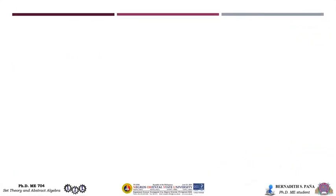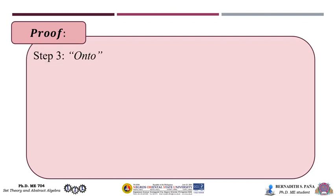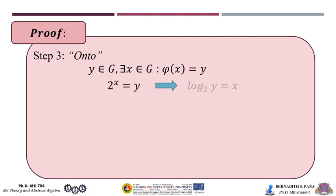The third step is to show that it is onto. This means that for each y in Ḡ, there must exist x in G such that φ(x) = y. So we have 2^x = y, and solving for x gives x = log₂(y). We double check: substituting any real number into 2^x always yields a positive real number, therefore it is onto.